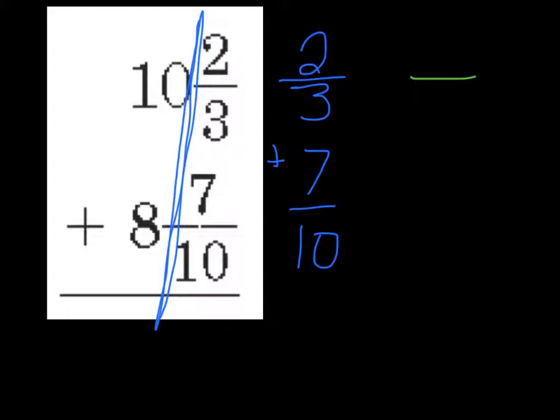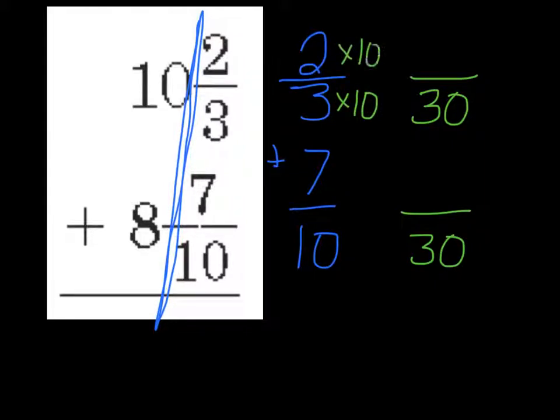Here I want to find something that threes and tens will work with. If you look at those two numbers, 3 and 10 don't have anything in common. They don't have any common factors. So our best bet for our common denominator is simply to multiply the two together. 3 times 10 is 30. So that's my common denominator. Now I need to go back and rewrite each of my fractions as an equivalent fraction. To get from 3 to 30, I multiply times 10. So I have to do the same thing to my numerator. 2 times 10 is 20.